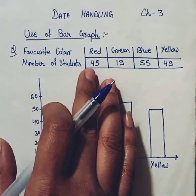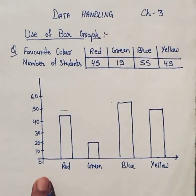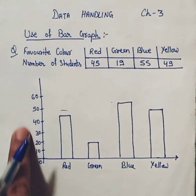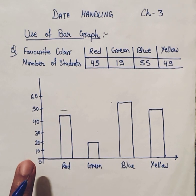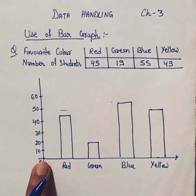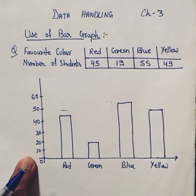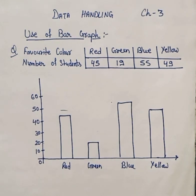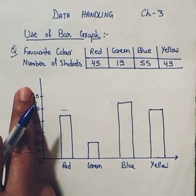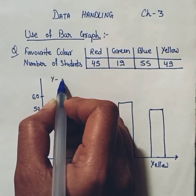The question is: how can we represent this data in a bar graph? Here I have drawn a graph with an x-axis and a y-axis starting from 0. First, you represent the table, and the important thing to remember is to check which type of scale we will take. On the y-axis, one block is equal to 10.